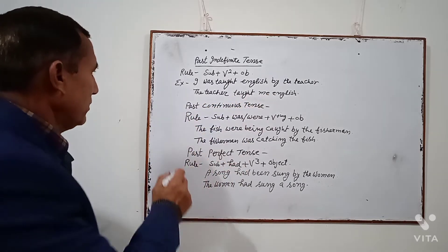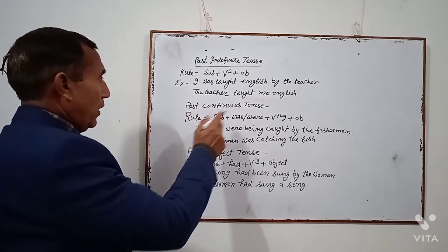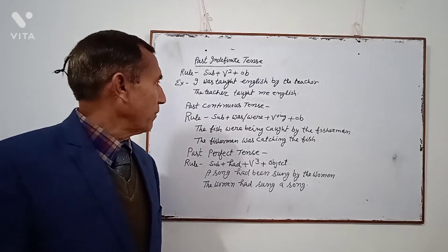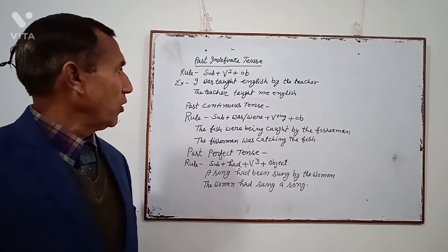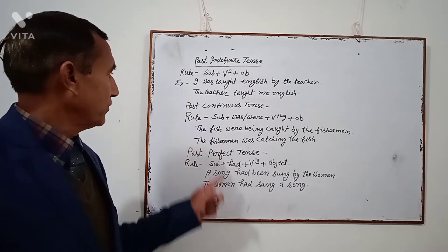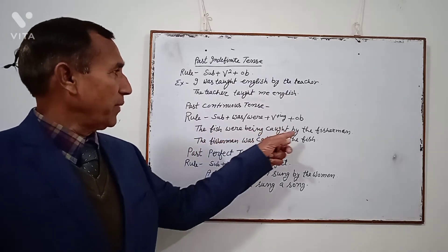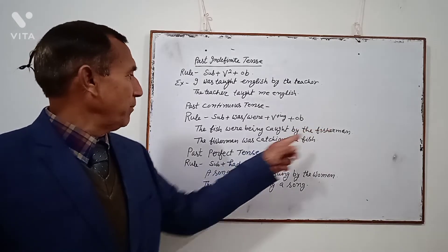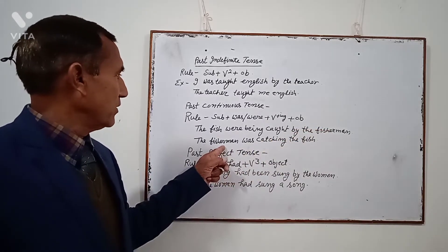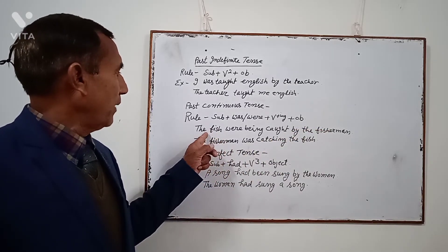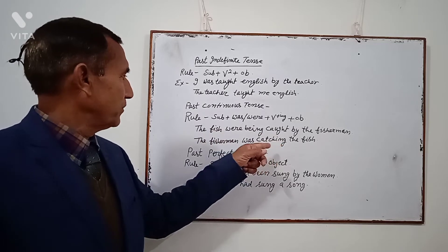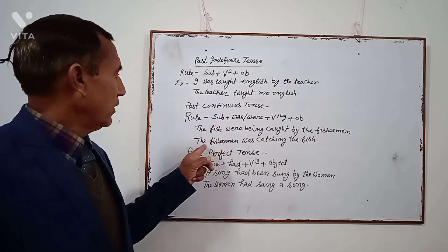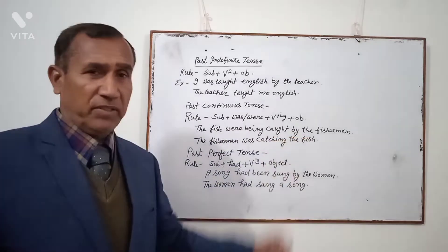Past Continuous Tense. Rule: Subject + was/were + V-ing + Object. Example: 'The fish were being caught by the fisherman.' The fisherman will be the subject, and the fish will be the object. So according to the rule: 'The fisherman was catching the fish.'